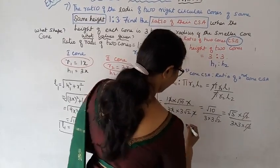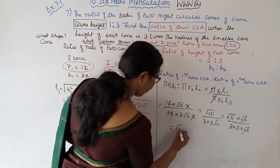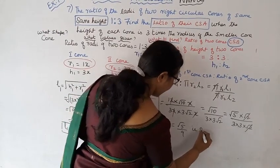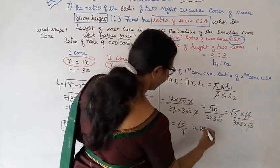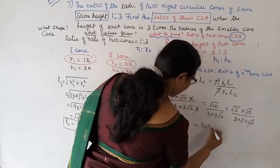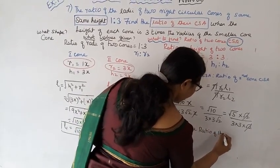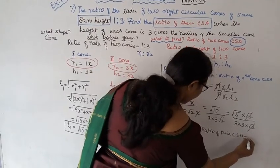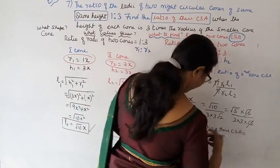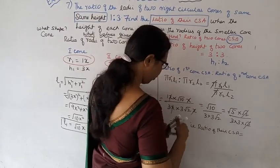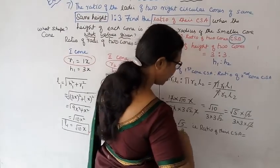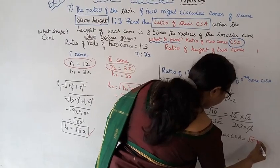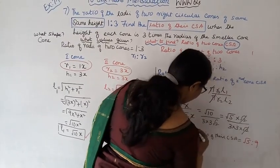Root 2 cancels. So we get the answer: the ratio is √5 is to 9.